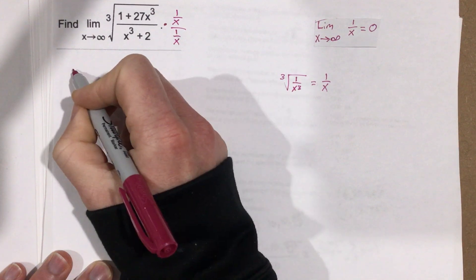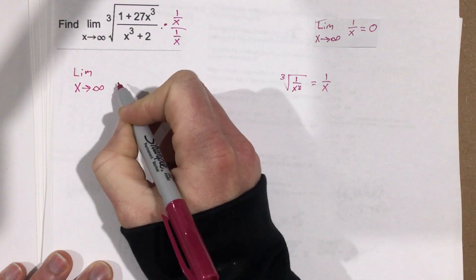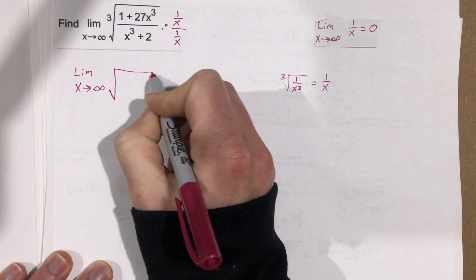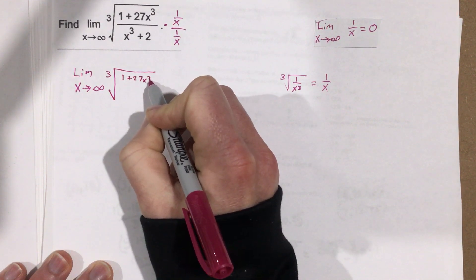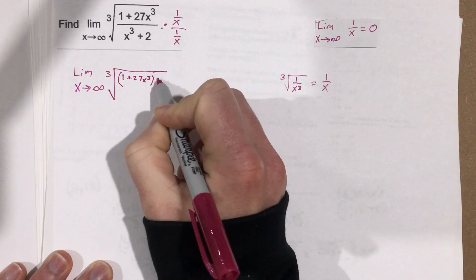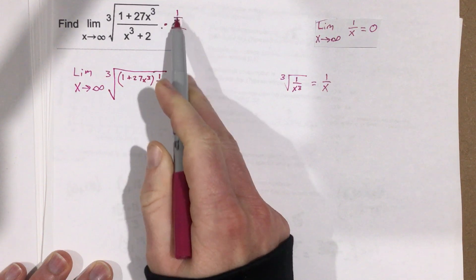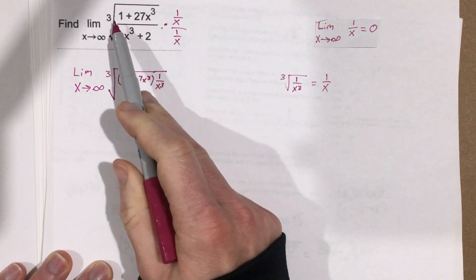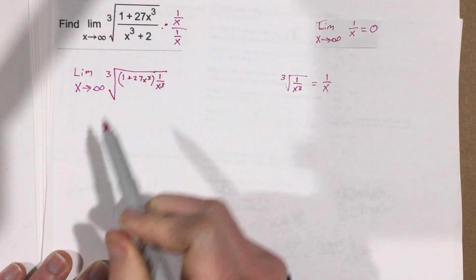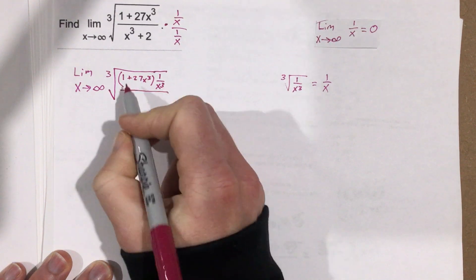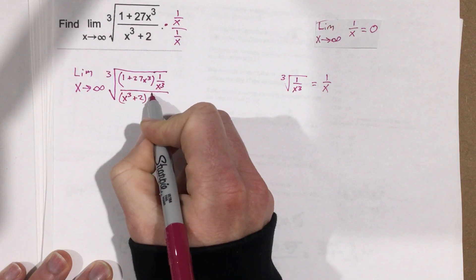That would be the exact equivalent of just multiplying by 1 over x on the outside. So that's how we start the problem. We're going to say: limit as x approaches infinity of cube root of (1 plus 27x cubed), multiplied by 1 over x cubed. We do the same thing to the bottom, so we end up with (x cubed plus 2) times 1 over x cubed.